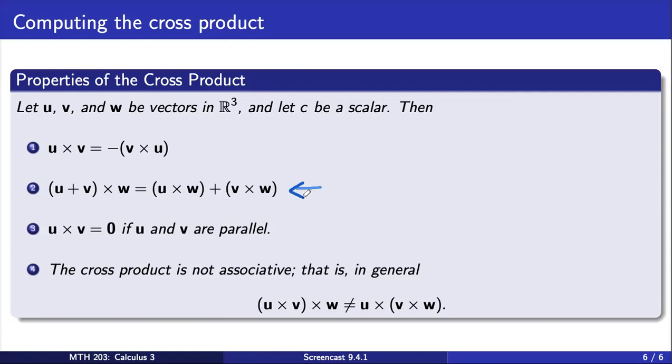In the second property, we see that the cross product does distribute over vector addition.